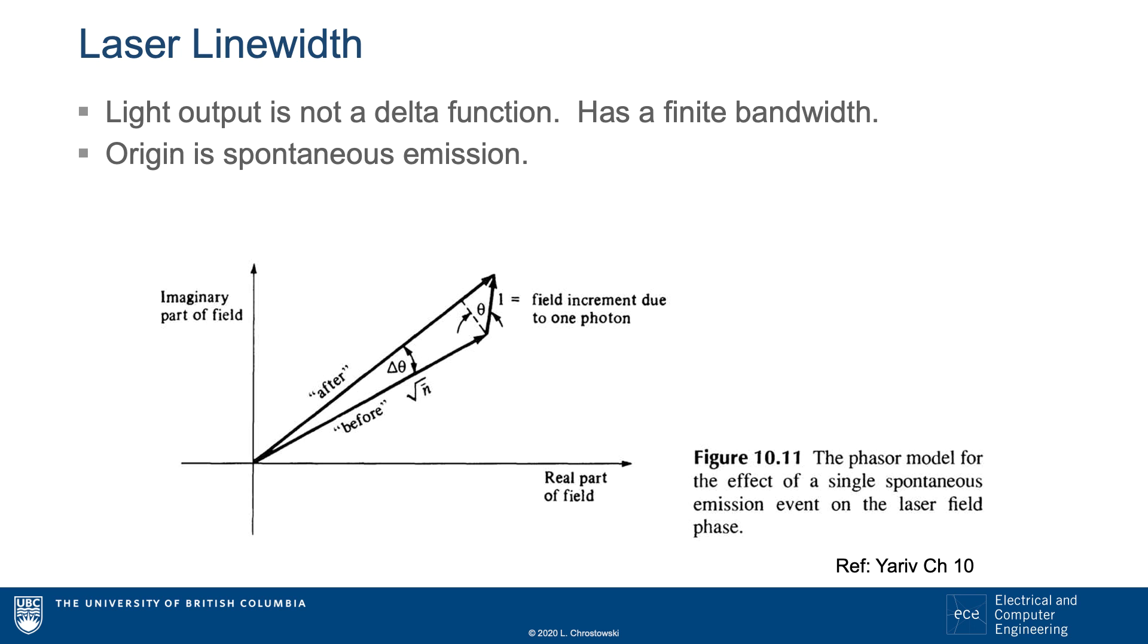The ideal laser would have a vector that is constant, and the optical spectrum would be a delta function. However, each time there is a spontaneous emission event, we add that photon, which has a random orientation in the phasor diagram, to the laser field.